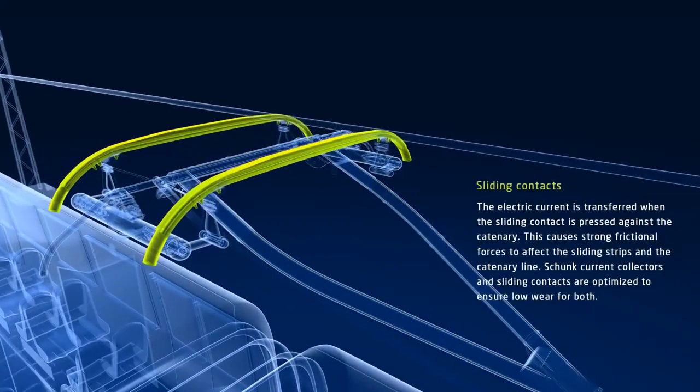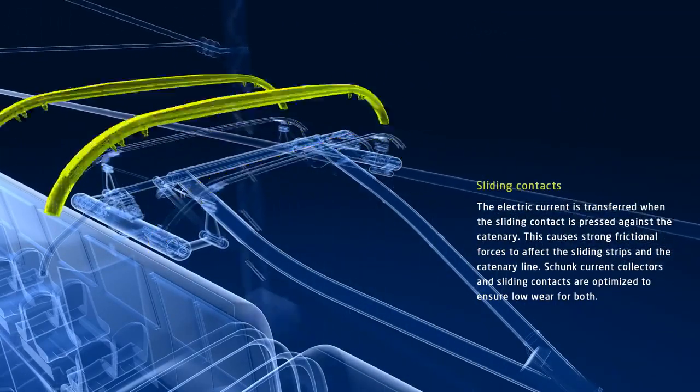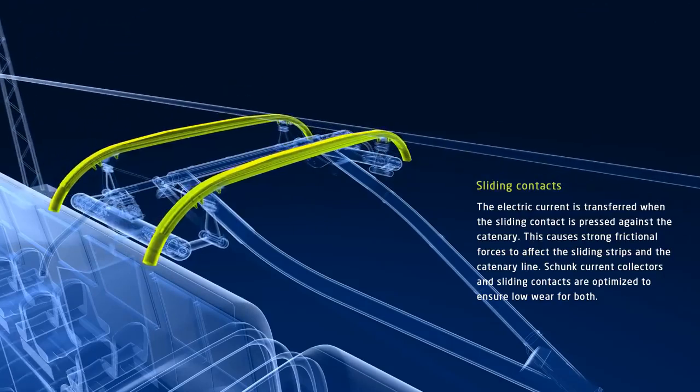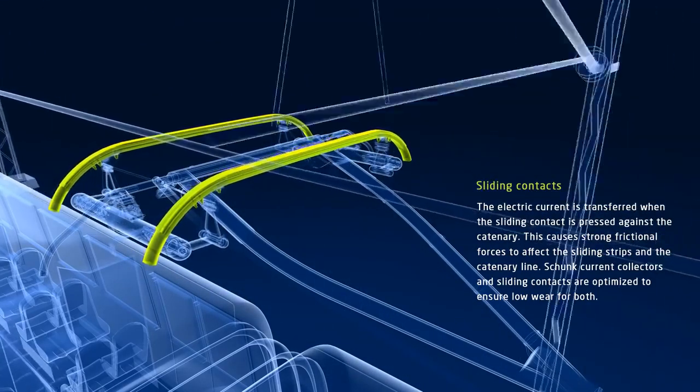The sliding strip performs an important function. As it is pressed against the catenary, it ensures electric current transfer. Strong frictional forces take effect here on the sliding strip and the catenary line.